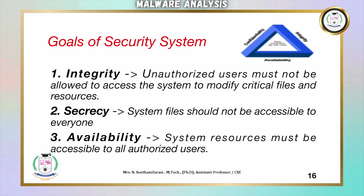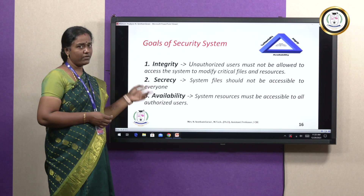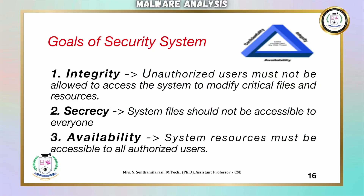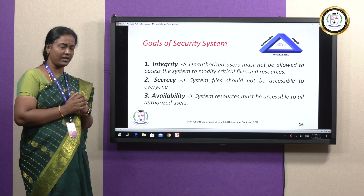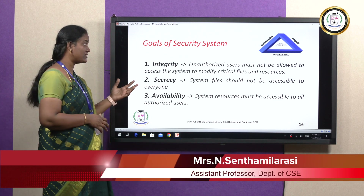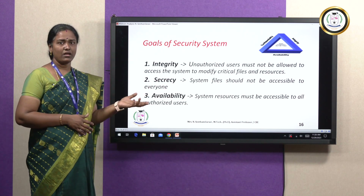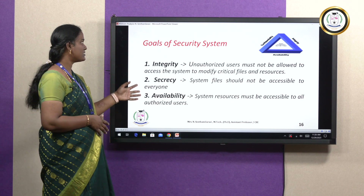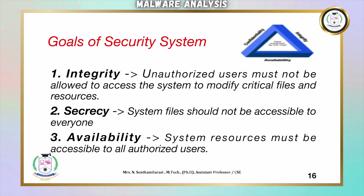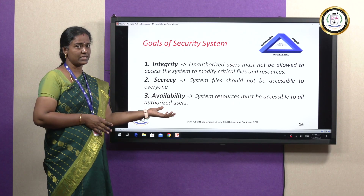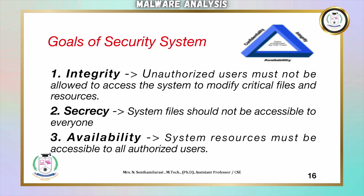The goals of a security system include integrity, secrecy, and availability. Integrity means unauthorized users must not be allowed to access the system to modify critical files and resources. Secrecy means system files should not be accessible to unauthorized persons — no unauthorized person should access our files. Availability means system resources must be accessible to all authorized users, not to unauthorized users.